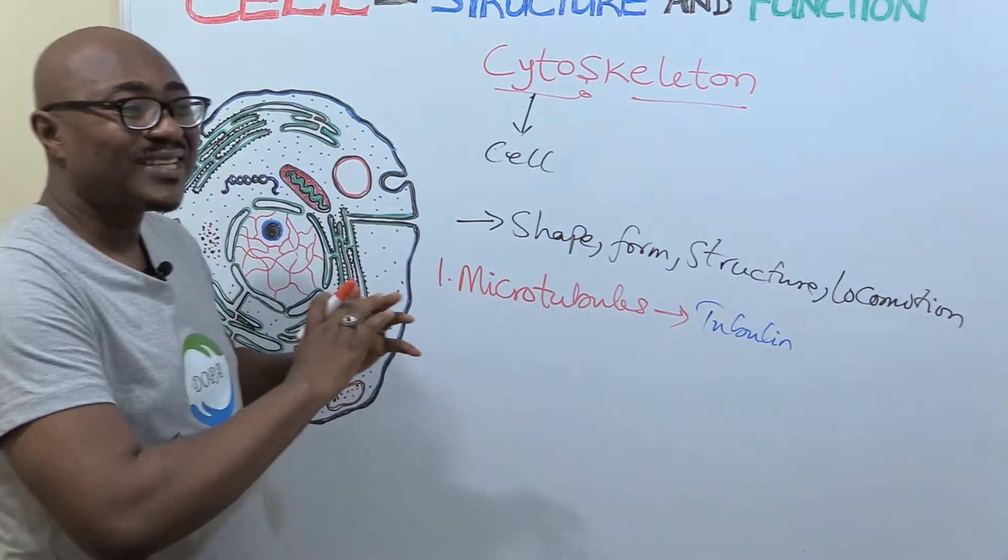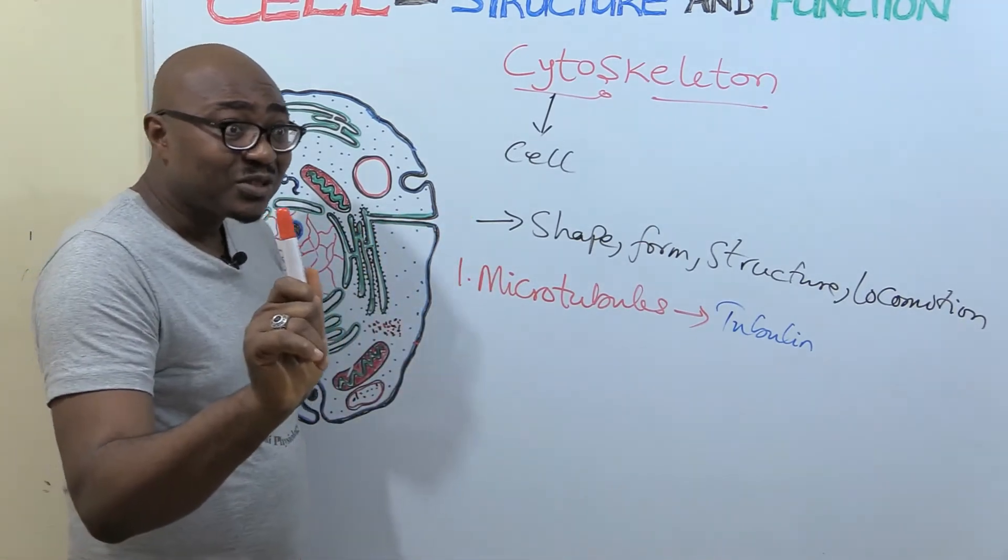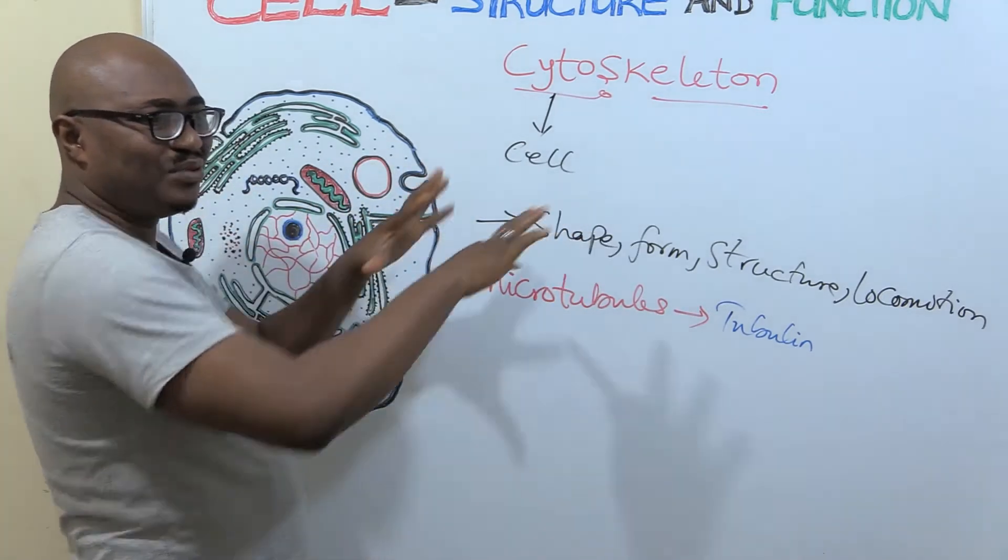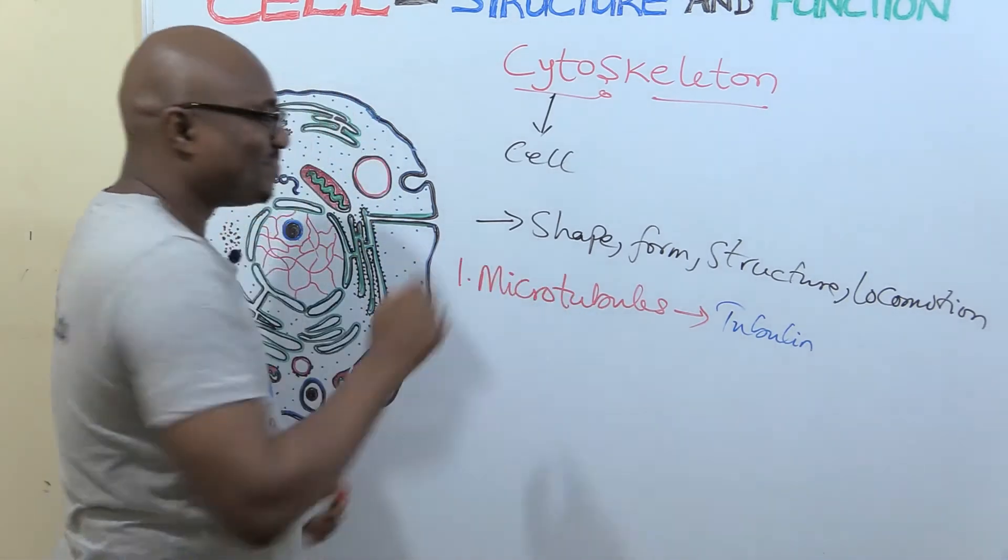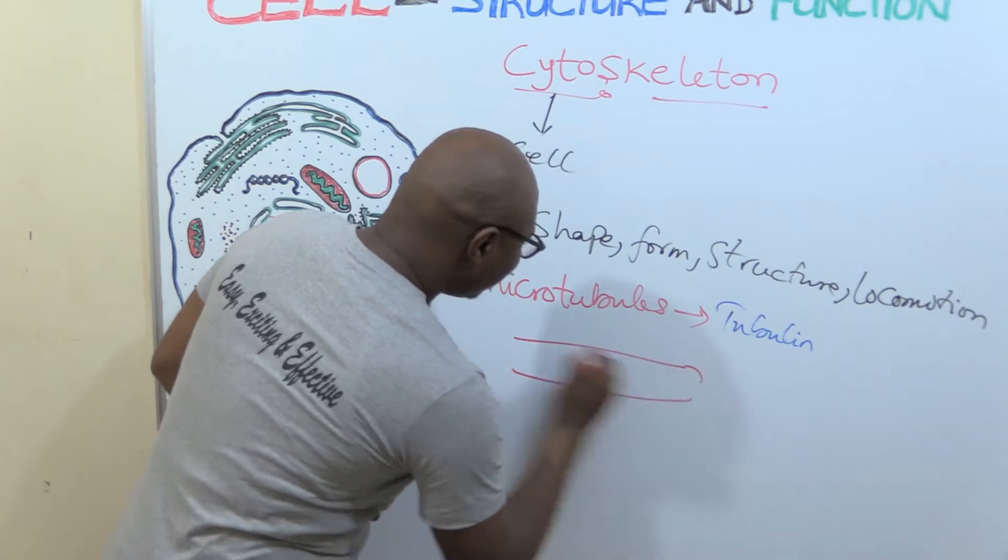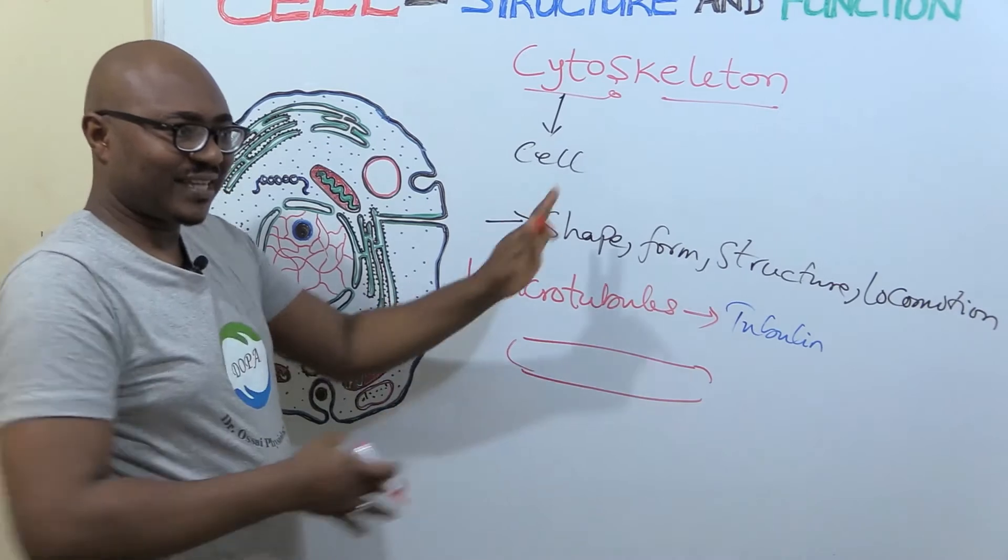Now, the microtubules are responsible for transporting substances. Remember, we talked about Golgi apparatus that its function is to distribute. It does that through the aid of microtubules. So it's just like tubules, they are all over everywhere, different parts. So they are just like train tracks.